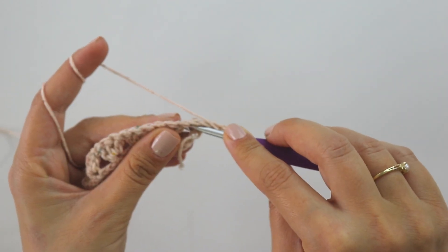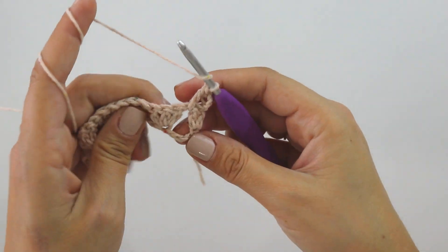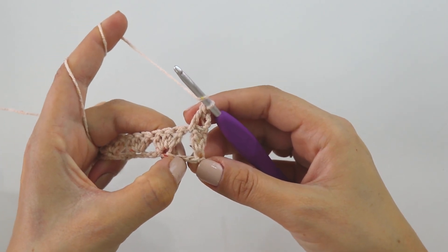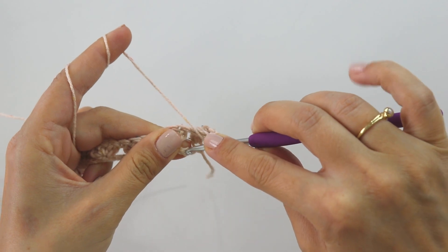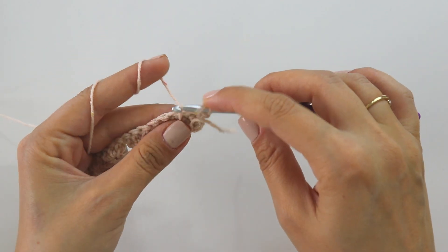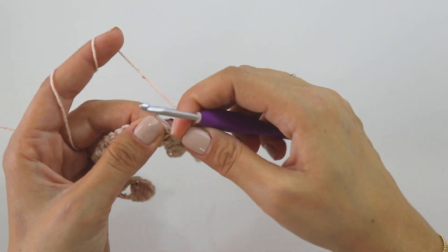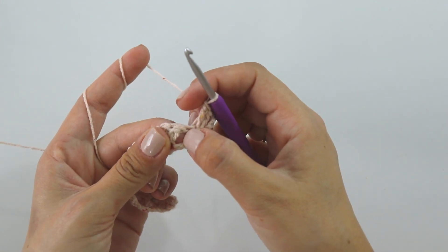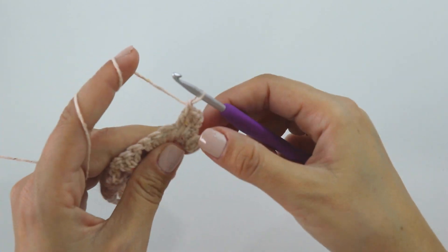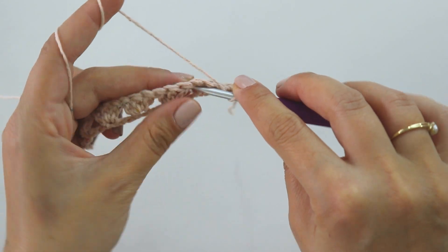Yarn over, insert here, make a double crochet. Yarn over, we will make one more double crochet but this time we will use this chain, okay, this second chain. Insert here, grab the yarn, make it a little longer and make a double crochet. And again insert into the same space here, not into this chain, the space, make one more double crochet. So we made the first one.